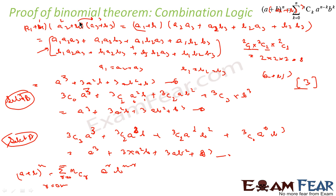So what we have done: to find (a + b)^n, we first created (a1+b1)(a2+b2)(a3+b3) just to explain the combination logic. We multiplied, got 8 values, and saw that each of these values has items from bucket 1, 2, and 3. We also proved via combination logic that there should be 8 items, and we actually found 8 — confirming that combination logic is present. Then setting a1 = a2 = a3 and b1 = b2 = b3, we got the formula.